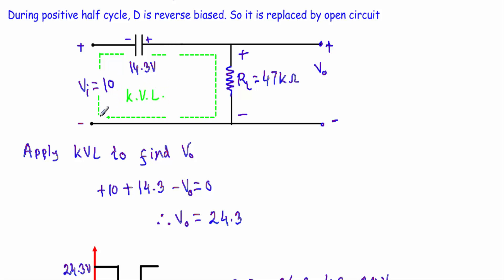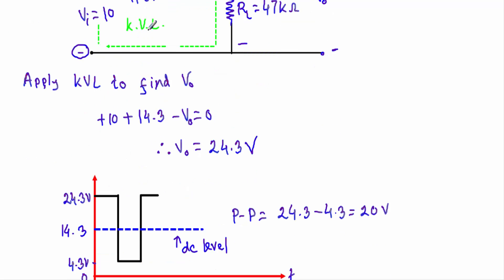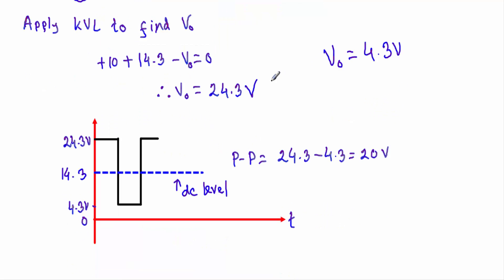Applying KVL in the clockwise direction during the positive half cycle: I encounter +10V (input, negative polarity first), then the capacitor voltage +14.3V (negative polarity first), then −Vo across Rl, and their sum equals zero. Therefore, Vo = 10 + 14.3 = 24.3V during the positive half cycle. During the negative half cycle, the output voltage is 4.3V.